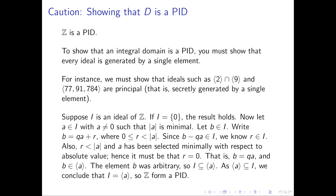Since b was an arbitrary element of I, we've shown that I is contained in the ideal generated by a. The reverse containment is automatic: the ideal generated by a is contained in I, since a is an element of I and the ideal generated by a is the smallest ideal containing a. Because we have both containments, we conclude the two sets are equal — the ideal I is the ideal generated by a, and the integers form a PID.